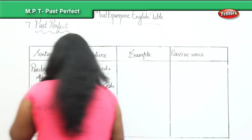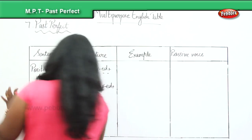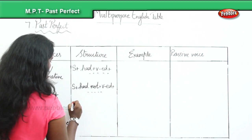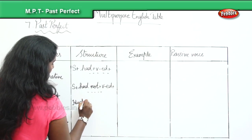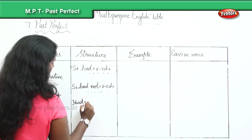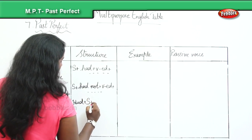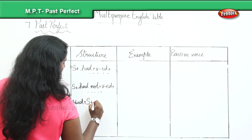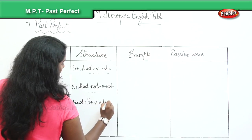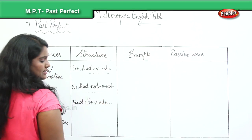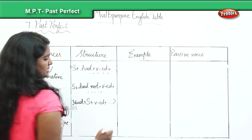Moving over to the interrogative sentence, we are going to begin with had. Had plus the subject plus the ed form of the verb plus the remaining part of the sentence, finishing with the question mark.